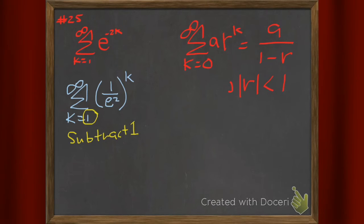So I'm going to subtract 1 from there. But whenever I subtract 1 from my index, I need to add 1 to my k's. And that's what's going on there.